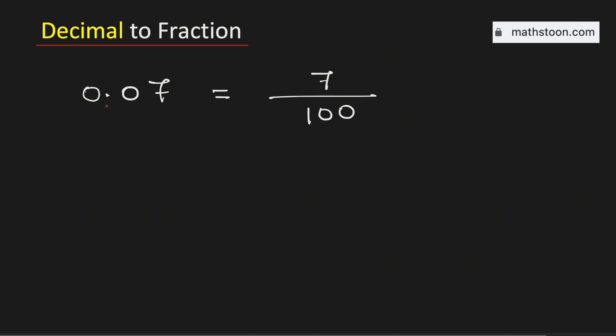Therefore, 0.07 as a fraction in simplest form is equal to 7 over 100. This is our final answer.